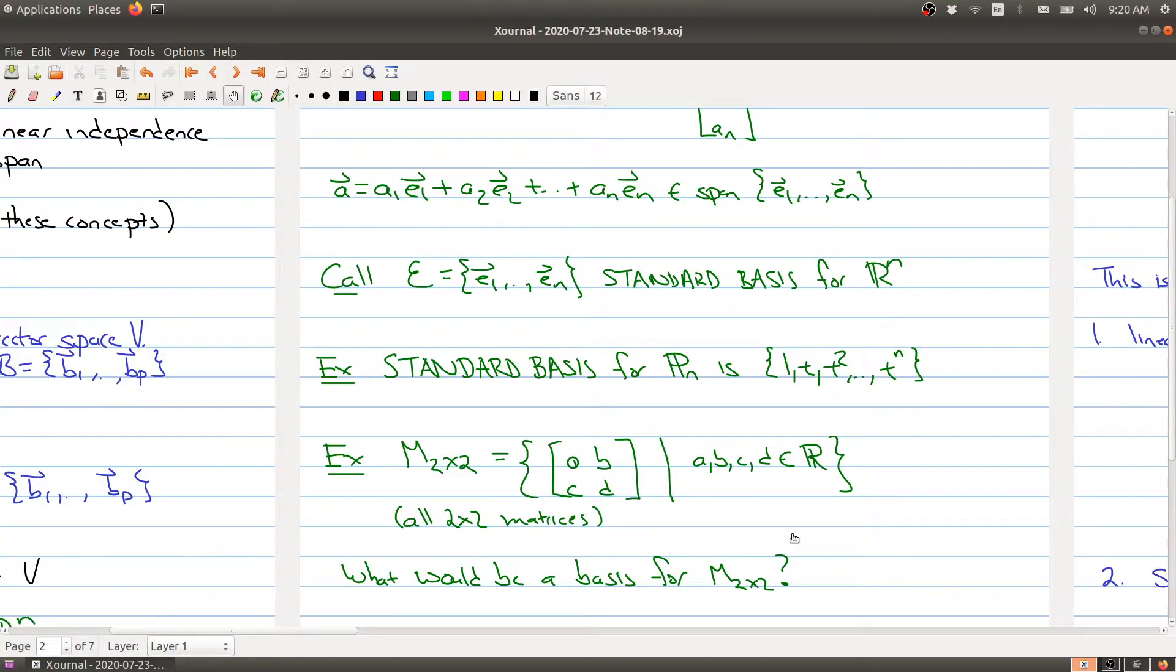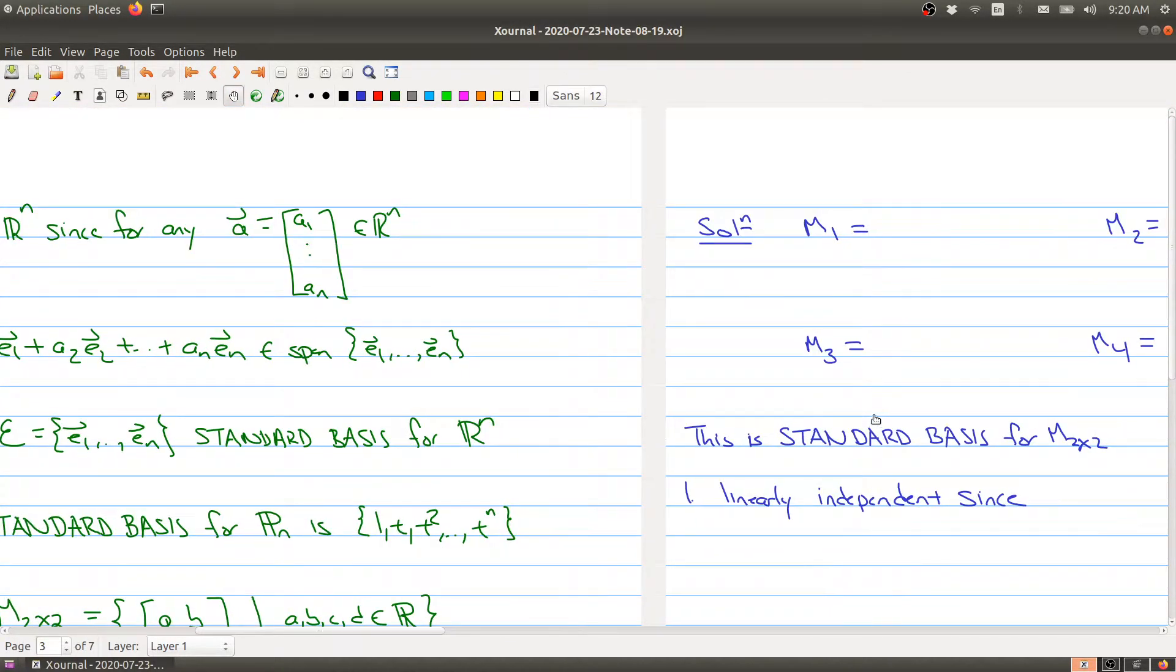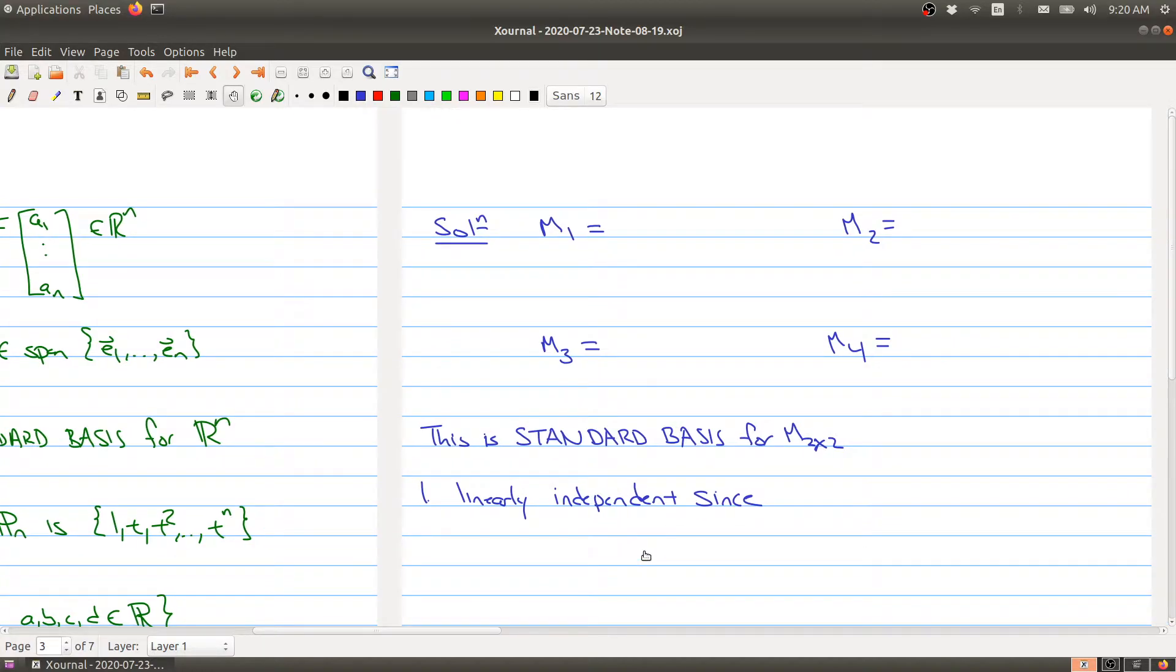So welcome back. Hopefully you've had a little bit of time to think about this question. What would be a basis for the set of all 2 by 2 matrices? And as I promised at the end of the last video that I would work it all out. And so it turns out that there's actually four matrices that form the basis for M22. And let me just write out what those matrices are.